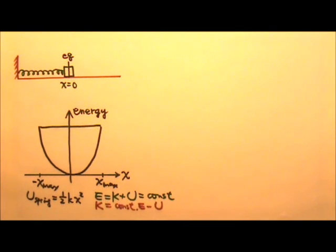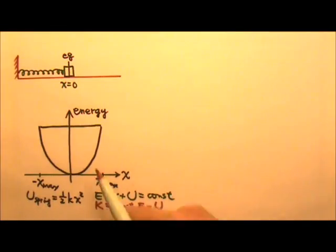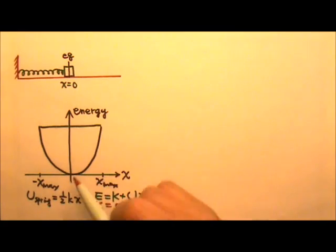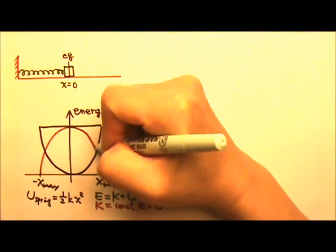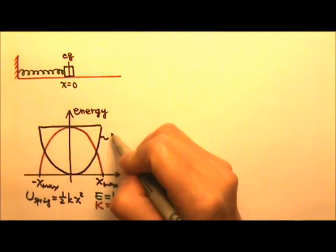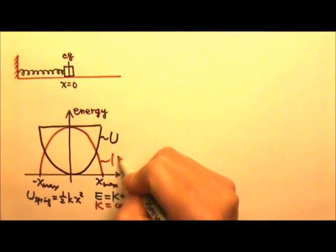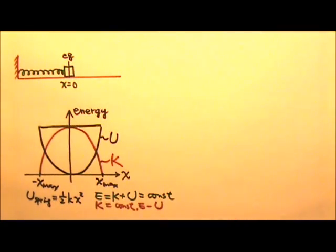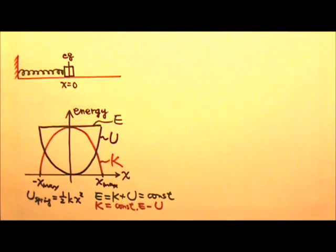So the kinetic energy graph is the potential energy U flipped. If we flip the U upside down, we get the kinetic energy graph. So this one is the potential energy, that's the kinetic energy, and the one that is a constant is the total mechanical energy.